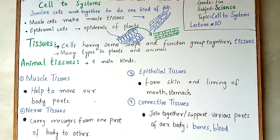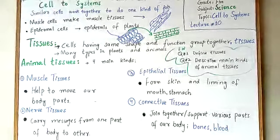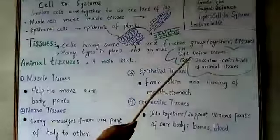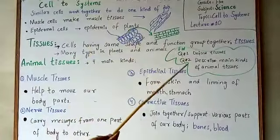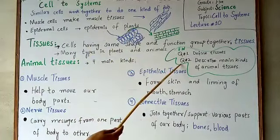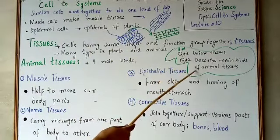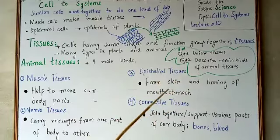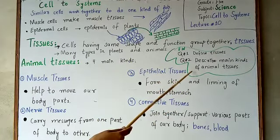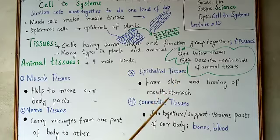So this is our today's topic. Now I will write your homework on the board. Question one: Define tissues — write the definition of tissues with an example. Question two: Describe the main kinds of animal tissues, as we have discussed the four kinds. Write these questions in your notebook and learn them by heart.